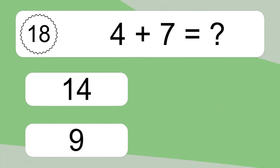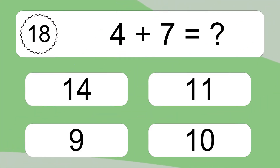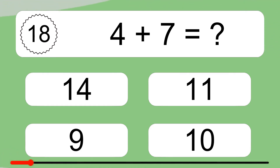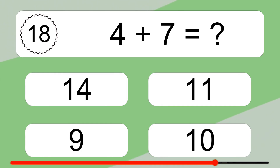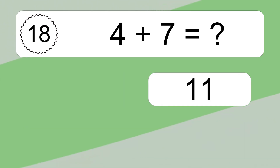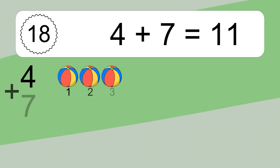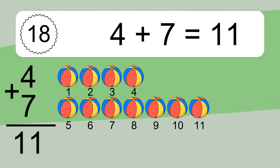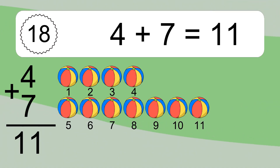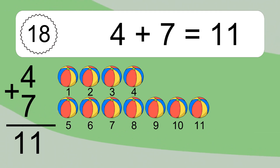Four plus seven equals what? Four plus seven equals eleven. Let's count it: one, two, three, four, five, six, seven, eight, nine, ten, eleven.